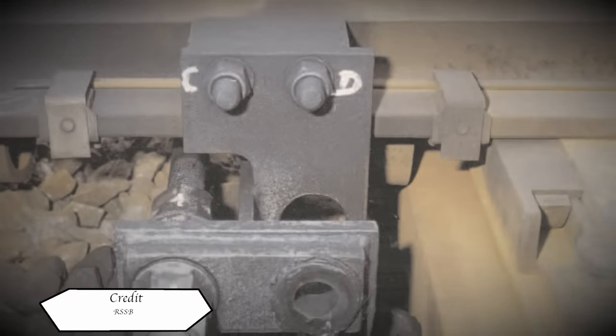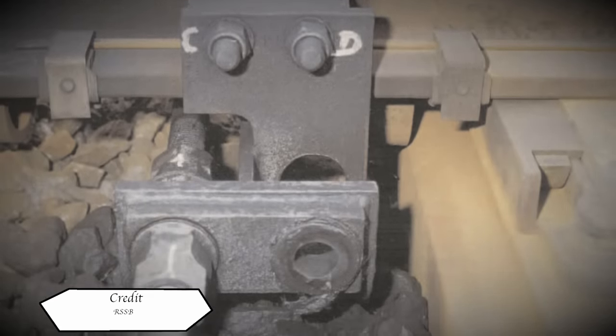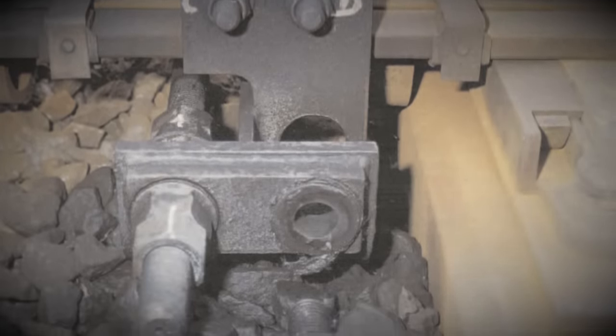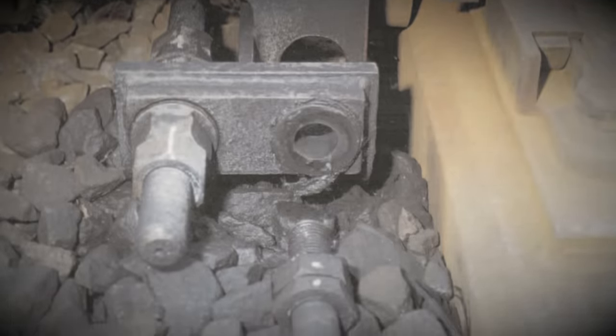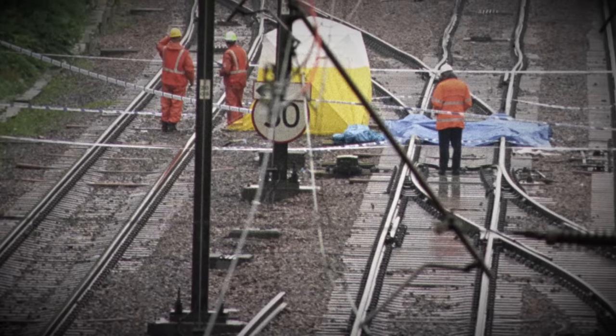The physical evidence allowed the HSC to reconstruct events alongside the trains on board data recorder. Clearly, the points were the cause of the derailment. But why? Well, two theories would be thrown out.